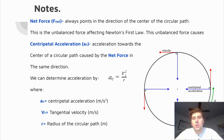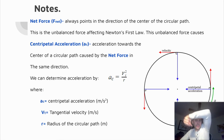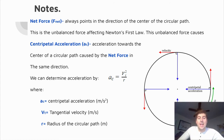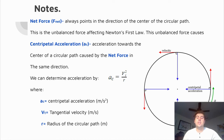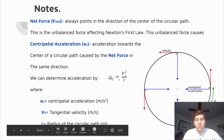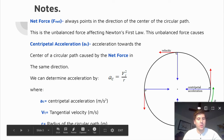The next vocabulary terms are net force and centripetal force. Our net force, or centripetal force, is always pointing towards the center of the circular path as an object moves in a circle. This is an unbalanced force that causes centripetal acceleration. Centripetal acceleration is also pointed towards the center of the circle as the object moves around the circular path. Our equation for centripetal acceleration is: centripetal acceleration equals tangential velocity squared divided by the radius. You can see centripetal acceleration represented by the blue arrows, always pointing towards the center of the circle.